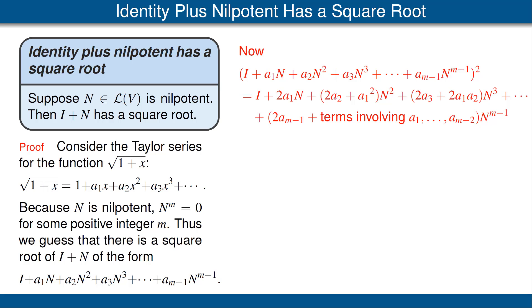plus the next term is 2a₂ plus a₁² times N squared. And then the coefficient of N cubed is 2a₃ plus 2a₁a₂, and so on, up until the last term is 2a_{m-1} plus terms involving the earlier coefficients, times N to the m minus first power. And there aren't any higher powers when we do the expansion of the square of that expression, because N to the m and all higher powers is equal to 0.